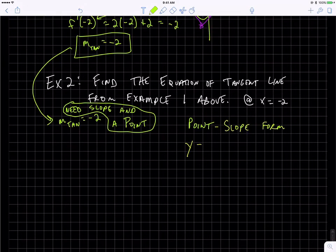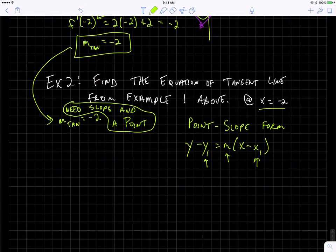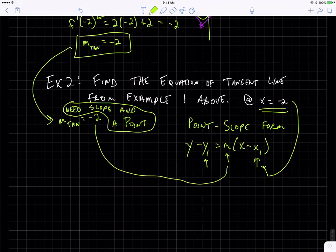Quick reminder, point-slope form: it's y minus y1 equals m times x minus x1. That means you have to plug in a value for y1, slope, and x1. We already have the slope of our tangent line, so we just need a point. We need the x and y coordinates of any point on the line. We know an x-coordinate is negative 2, so that's going to go in there for x1. We know our slope is going to go in there for m. How do we find y1?